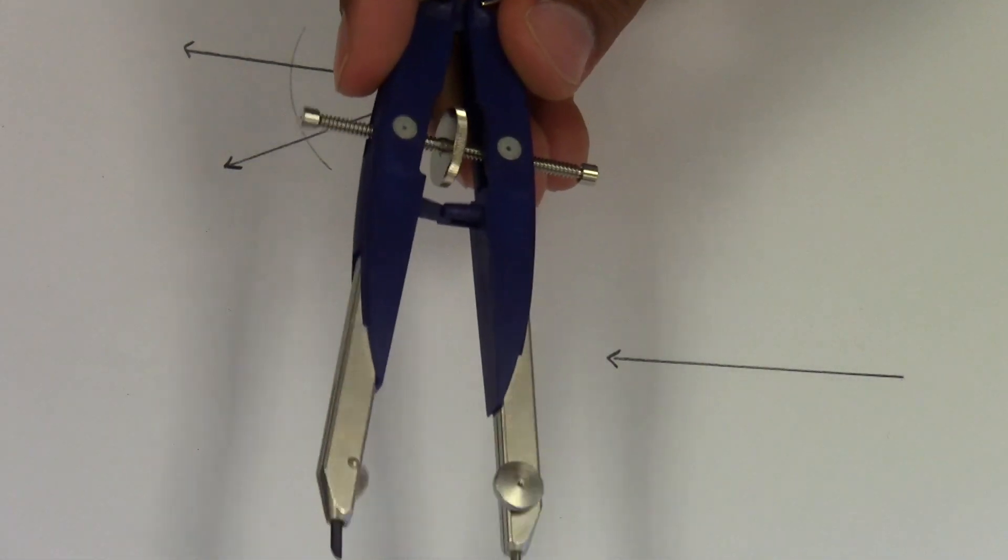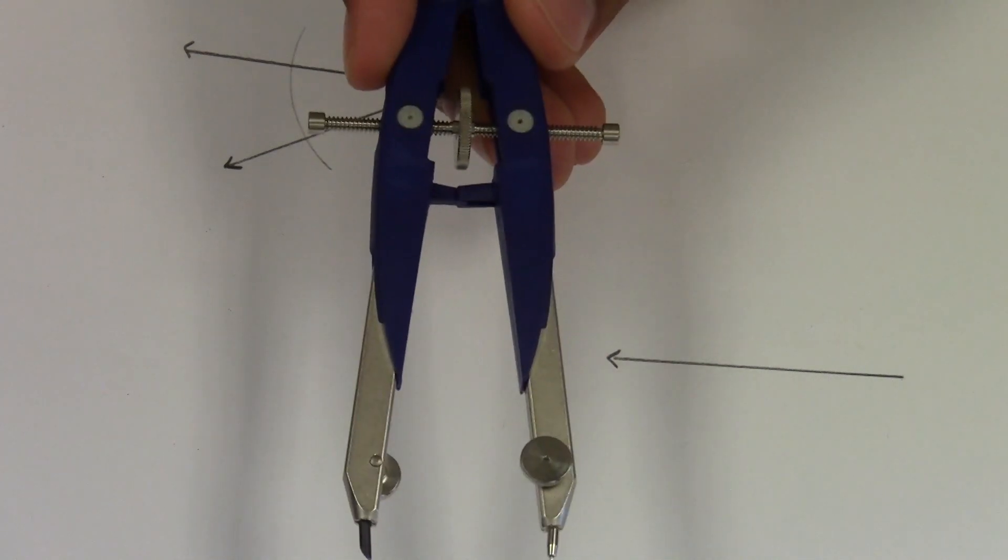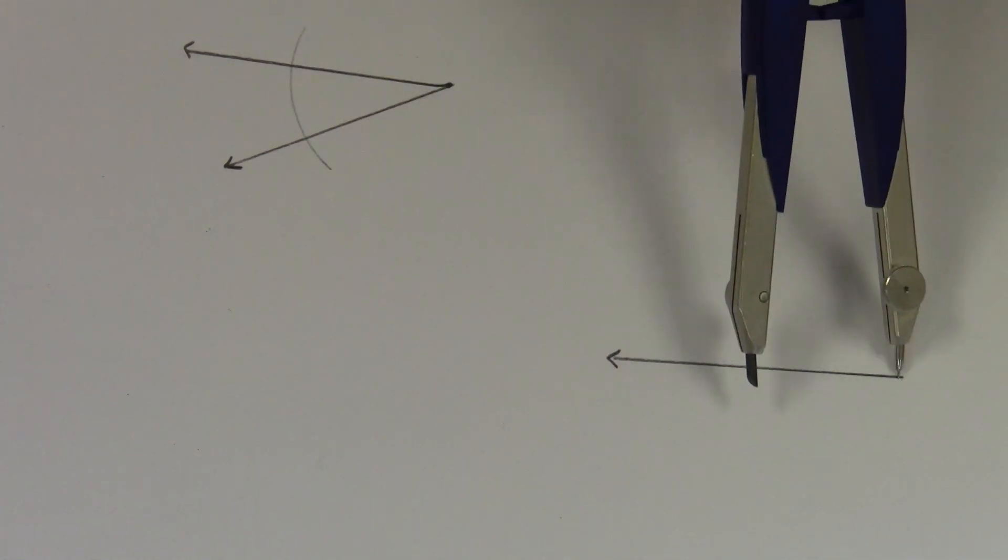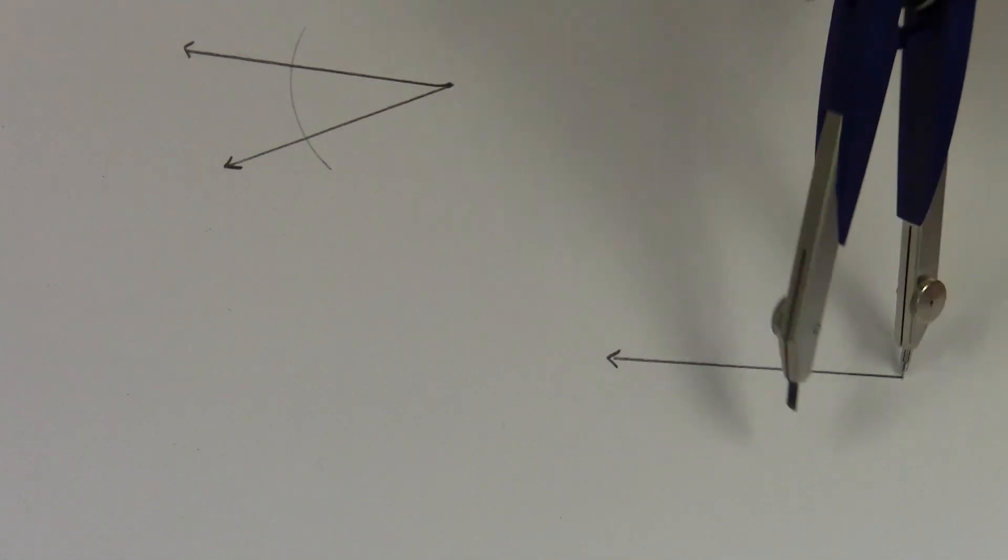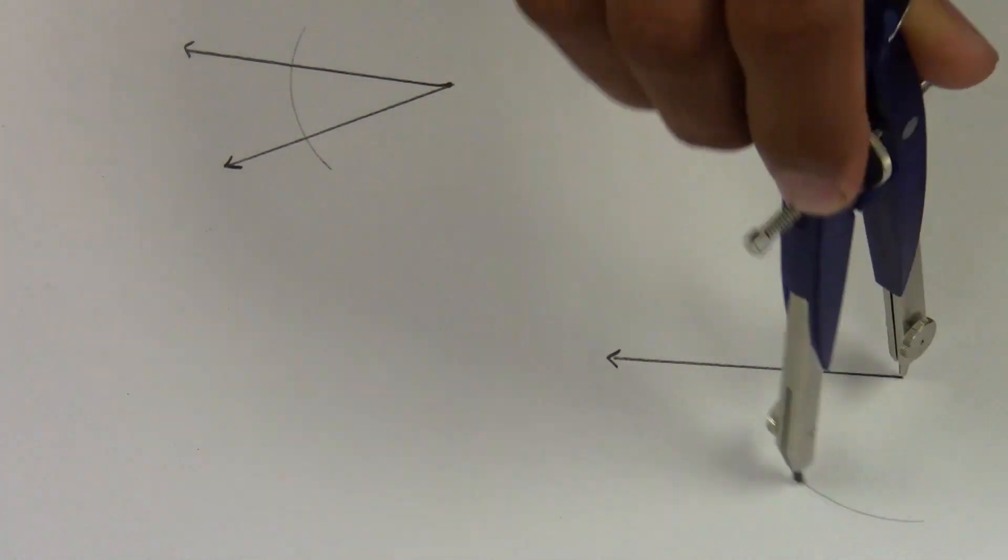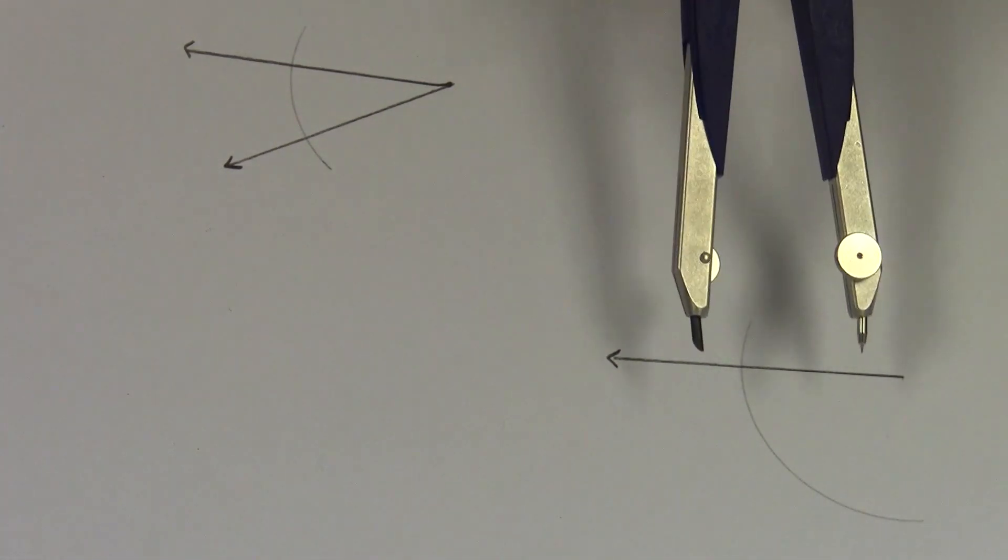You're still using the same amount of opening, and you're going to do the same on your new ray. So for me, I'm going to do this. Notice that I overestimated.